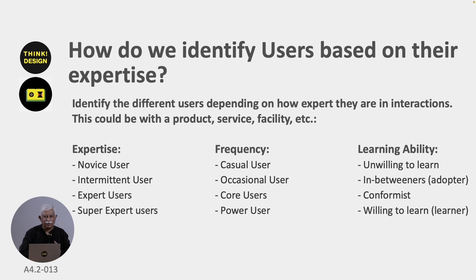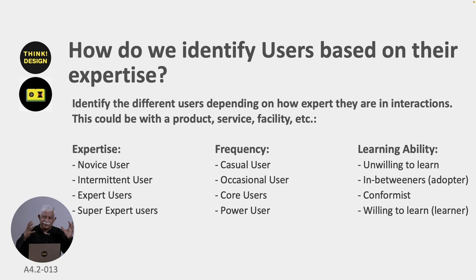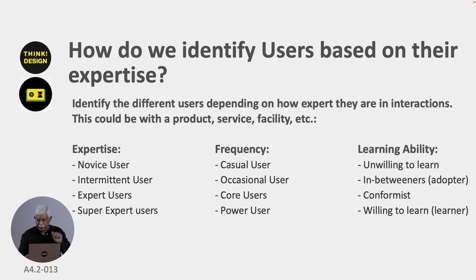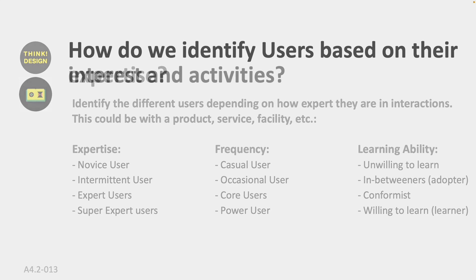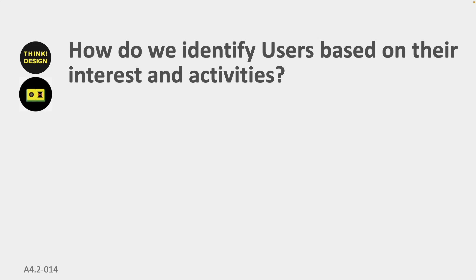You can also classify users based on frequency of use: casual users, occasional users, core users who need it all the time, and power users who need it almost all the time. For example, a taxi driver is a core user of a car, and someone in the taxi all the time becomes a power user. Users also differ in learning ability — some are unwilling to learn a new skill, some are in between or conformist, and some are willing to learn. Users do not fall into one category but many, and this is quite important when designing an object or service.